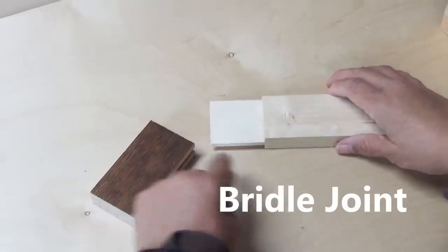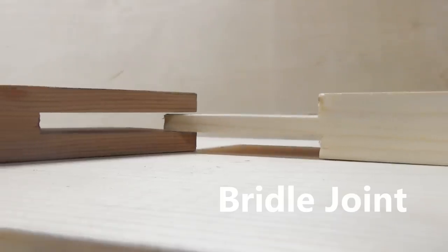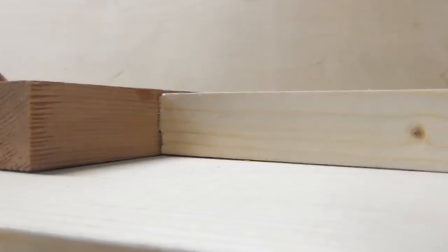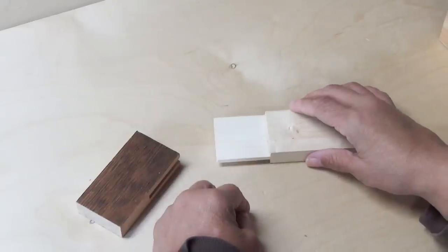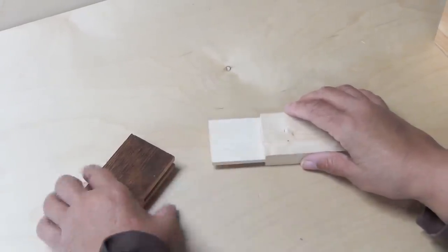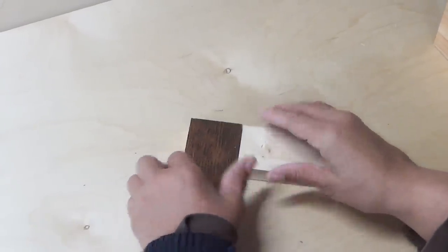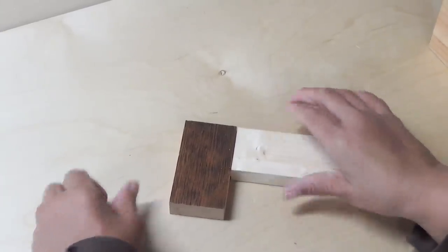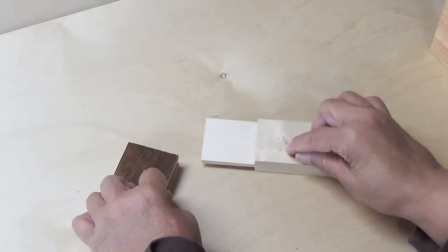I'm going to show you a very simple but very strong joint called a bridal joint. Once the two components are put together it creates an incredibly strong joint. The reason for that is all this real estate. So when you glue it up you've got a lot of long grain to long grain and that creates a very strong joint. It's perfect for the beginner.